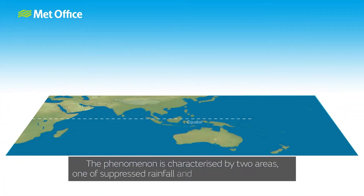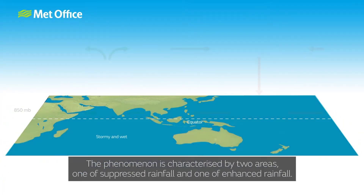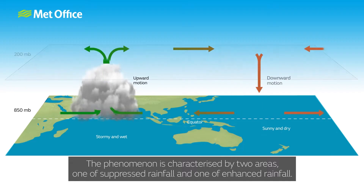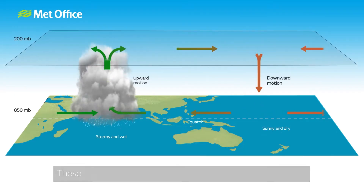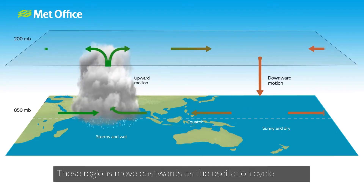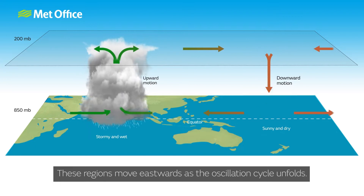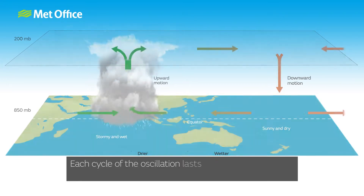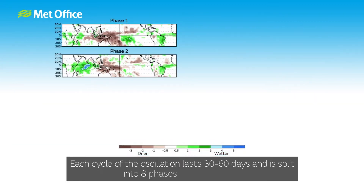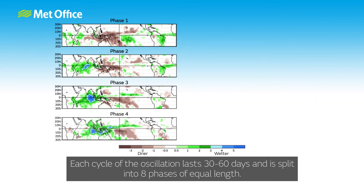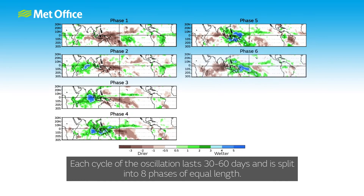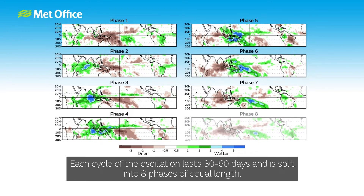The phenomenon is characterized by two areas — one of suppressed rainfall and one of enhanced rainfall. These regions move eastwards as the oscillation cycle unfolds. Each cycle of the oscillation lasts 30 to 60 days and is split into eight phases of equal length.